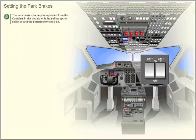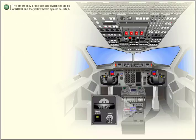Setting the park brakes. The park brake can only be operated from the captain's brake pedals with the yellow system selected and the batteries switched on. The emergency brake selector switch should be at normal and the yellow brake system selected.